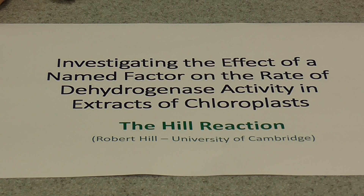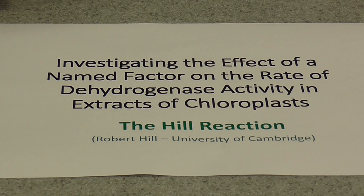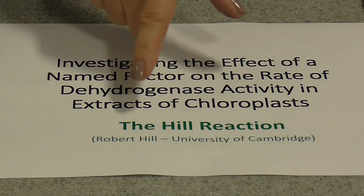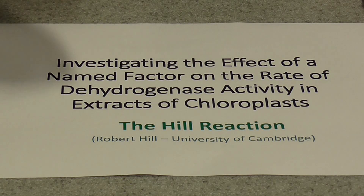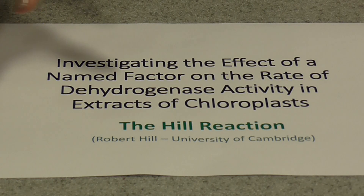I'm going to show you an investigation into the effects of a named factor — the factor we're going to change today is wavelength, or colour of light, on the rate of dehydrogenase activity in extracts of chloroplasts. This is a famous experiment known as the Hill reaction, after Robert Hill from the University of Cambridge, who first developed this technique to investigate the light-dependent reactions of photosynthesis.